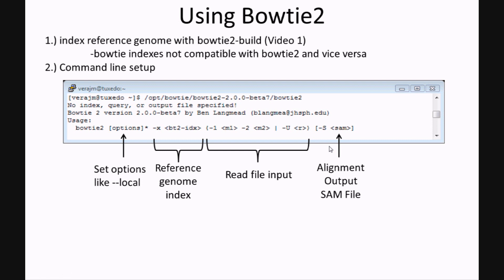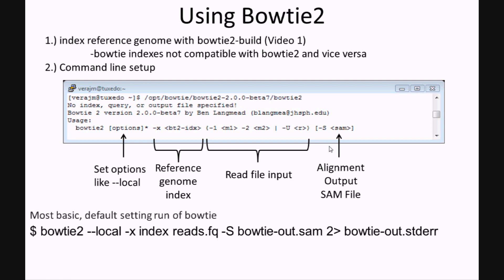Following this setup, our most basic default Bowtie 2 run would look like this. We begin with the command Bowtie 2, choose local or end-to-end alignment, designate the index name with the -x option, followed by our reads and our output file. And again, we're going to capture the standard error output from Bowtie 2.